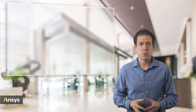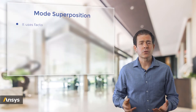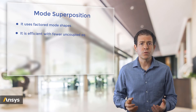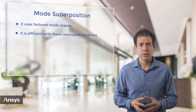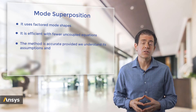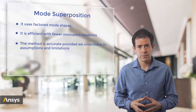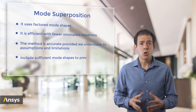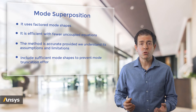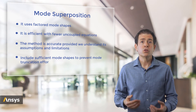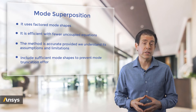In these prior lessons, we introduced the concept of mode superposition, which uses the factored mode shapes. We also discussed how it is efficient with fewer equations that are uncoupled. Including a sufficient number of modes in the response will be important to prevent mode truncation error, where we do not have sufficient modes available to properly account for the dynamic response.